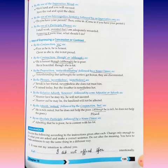Or by the conjunction 'though' or 'although': He is honest though. It may be, although he is poor. By the preposition 'notwithstanding' followed by a noun clause: Notwithstanding that the workers get bonus, they are discontented.